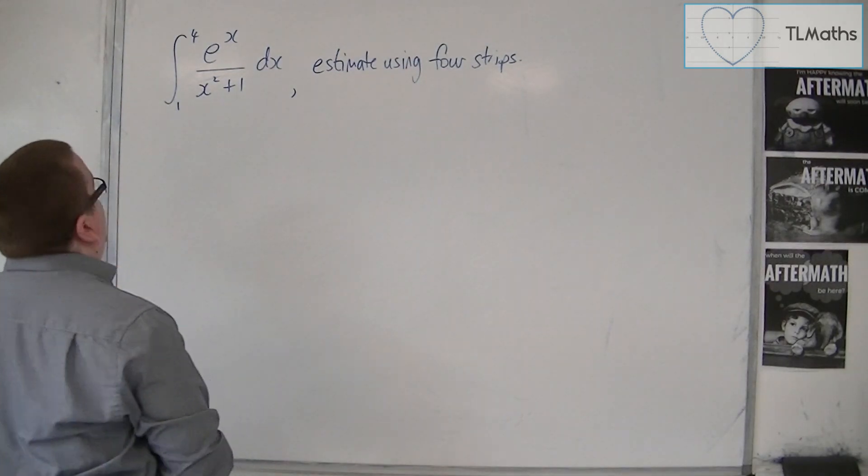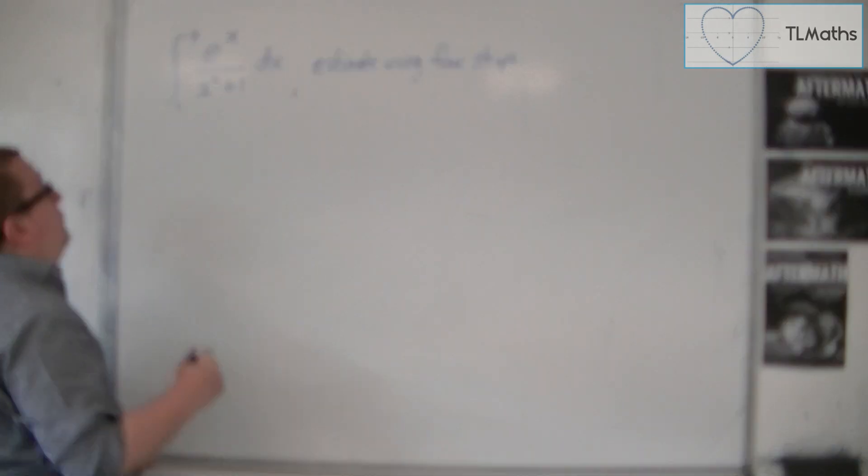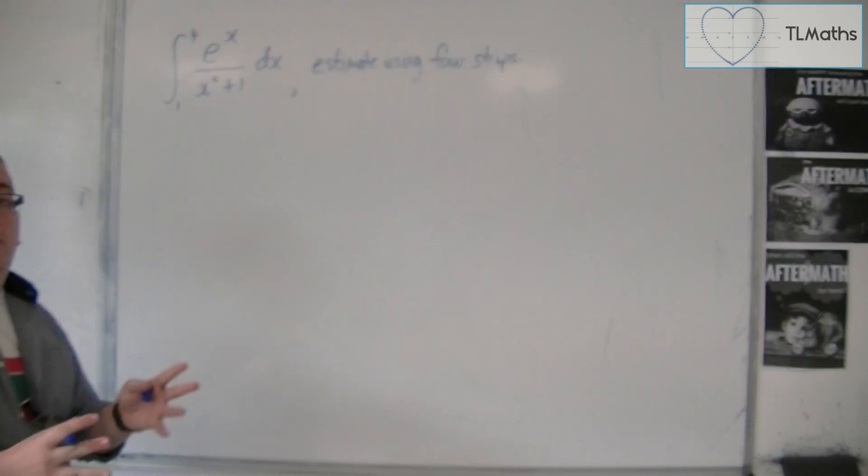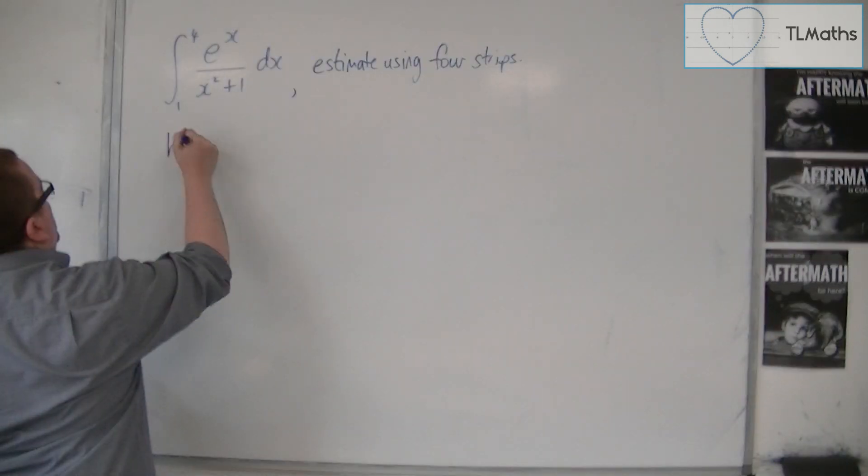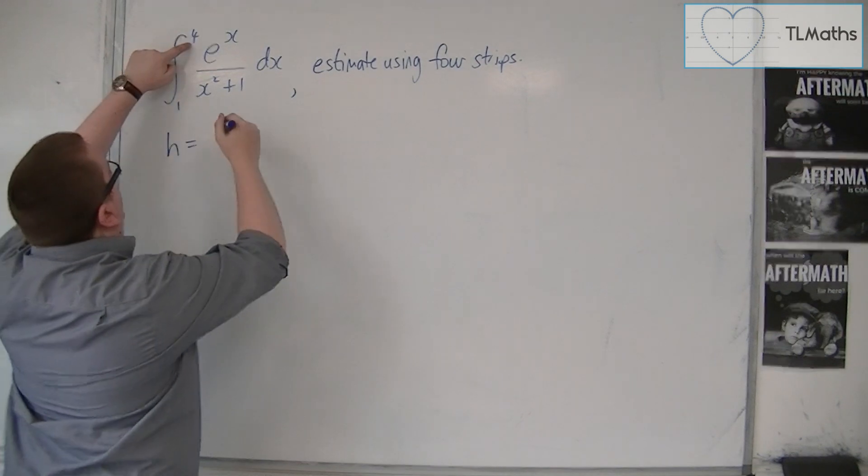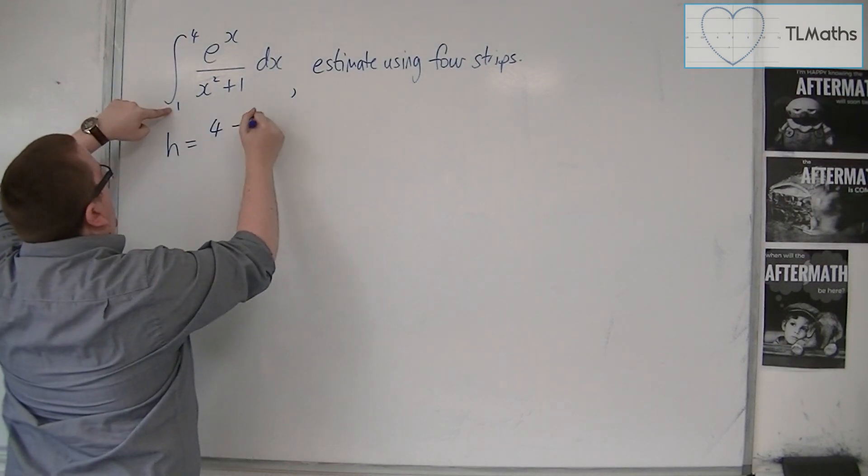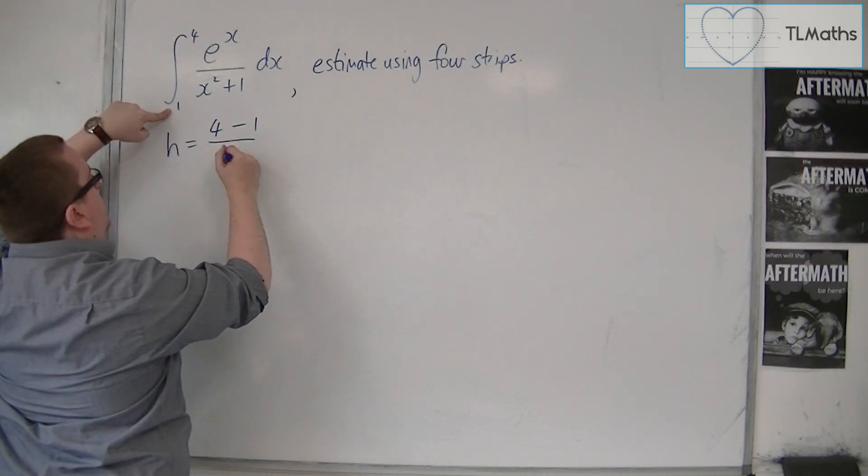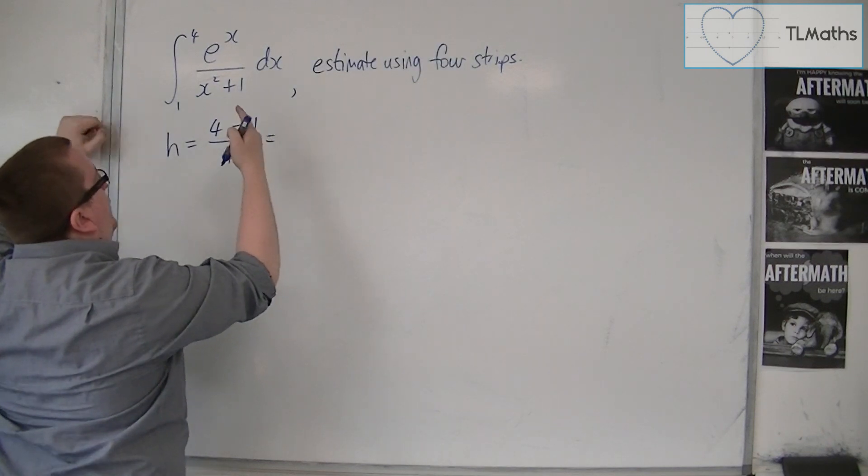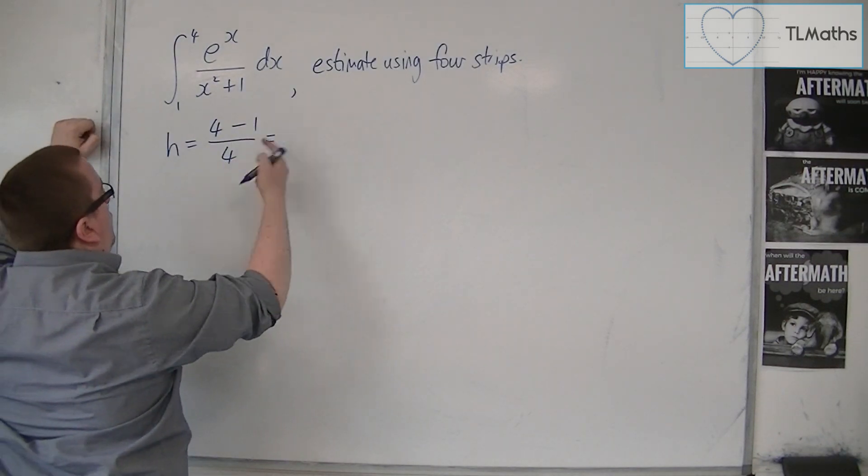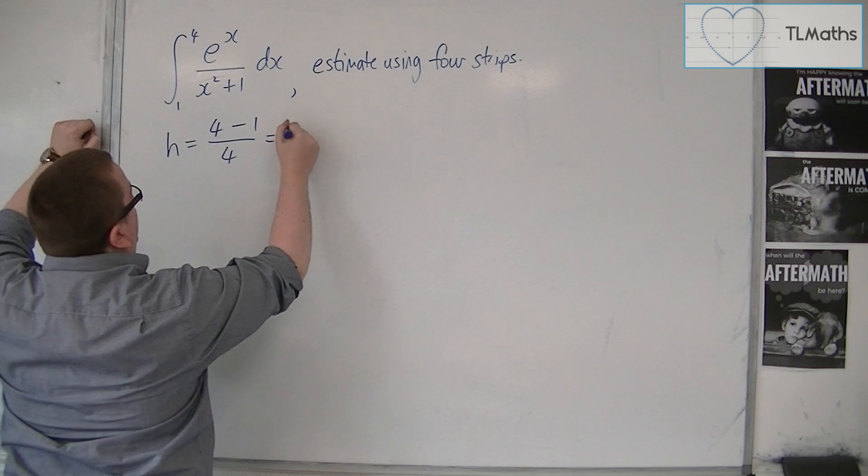So what I would probably suggest first is to figure out what h is. So h, the width of the strip, is 4 take away 1 divided by 4. So 4 take away 1 is 3, 3 divided by 4 is 3 quarters or 0.75.